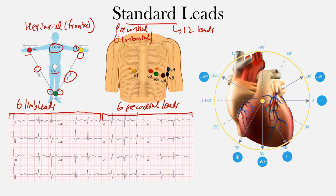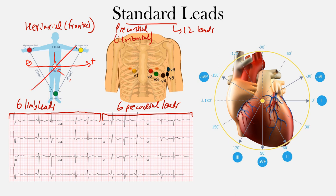Here's your heart and you want these leads to sit right over the top. So these are the limb leads. Let's take lead one and move it to the center so the positive end is here and the negative here. Now let's take lead three and move it towards the center as well, such that the positive end is here and the negative end here. We'll do the same with lead two, moved to the middle, with the positive end here and the negative end there.